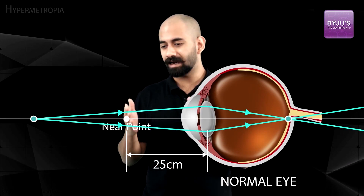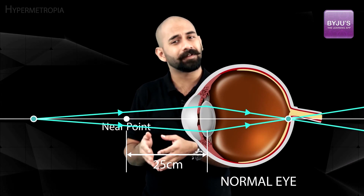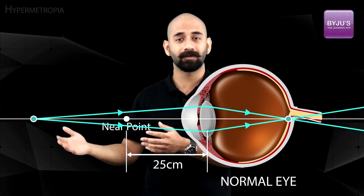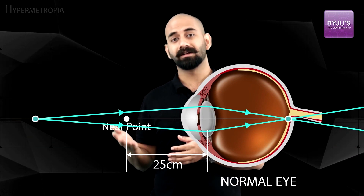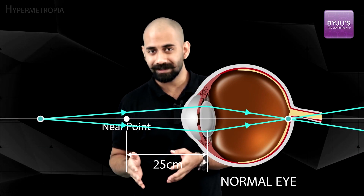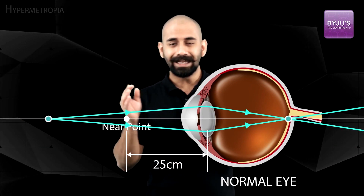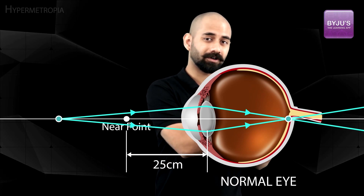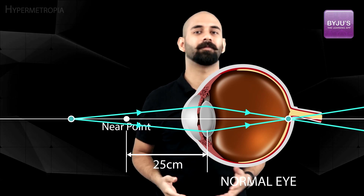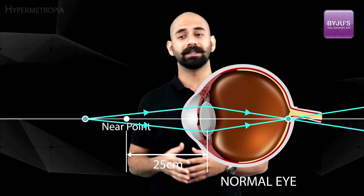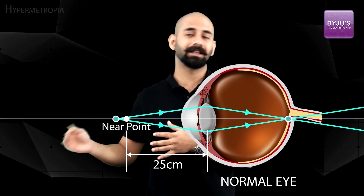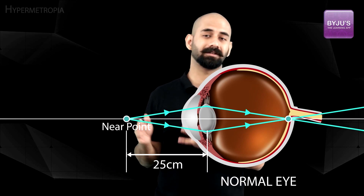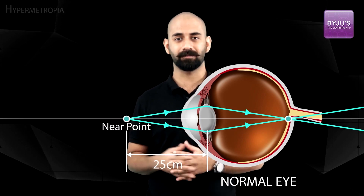This issue doesn't exist for the normal eye because its near point is at 25 centimeters, not further away. So for a normal eye, the image remains focused on the retina right up until the object reaches 25 centimeters — the image is clear until that distance.